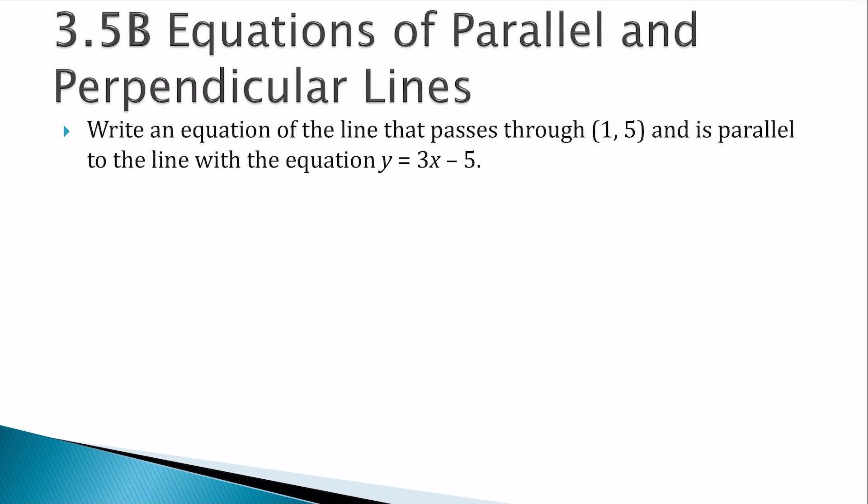Let's write the equation of the line that passes through 1, 5 and is parallel to the line with the equation y equals 3x minus 5. Well, if they're parallel, they have the same slope. So if this is y equals mx plus b, the slope is 3.